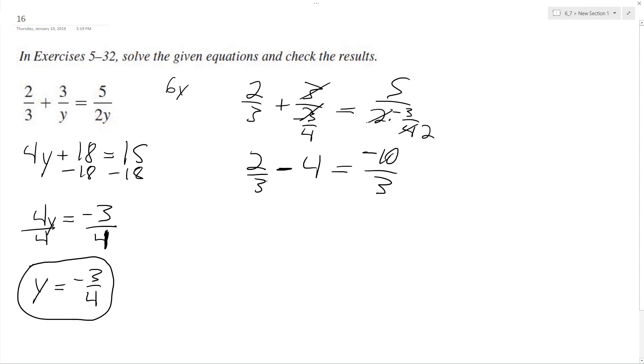Alright, so subtract 4 here, it's the same thing as... 12 over 3. And if you look here, 2 minus 12 is negative 10 over 3 equals negative 10 over 3.